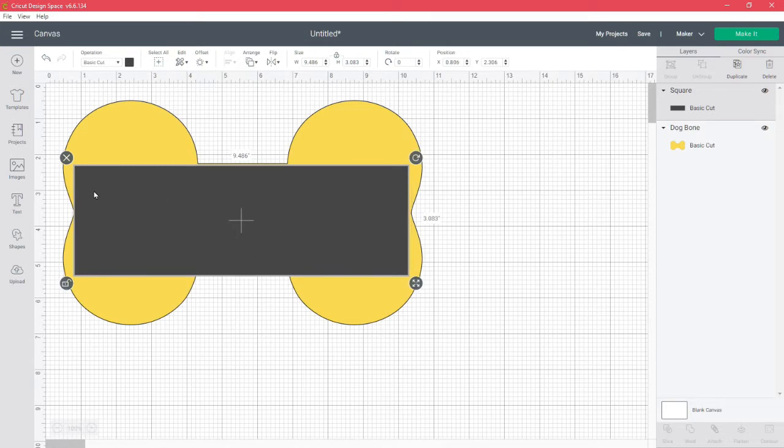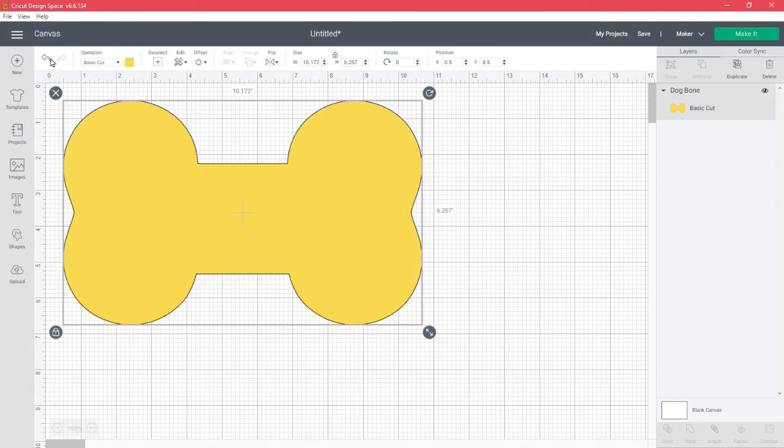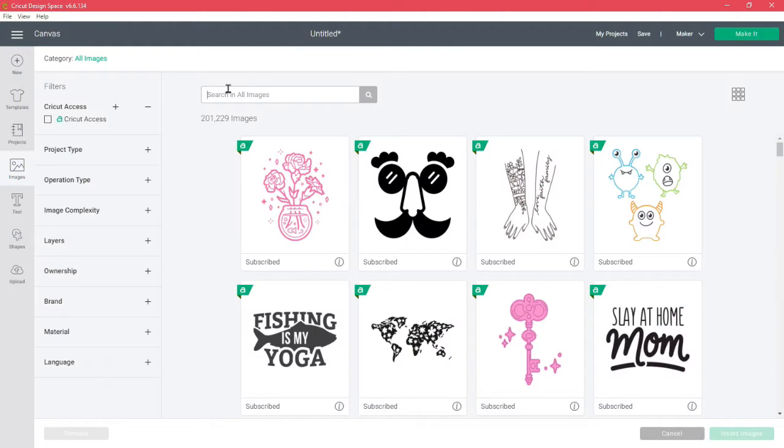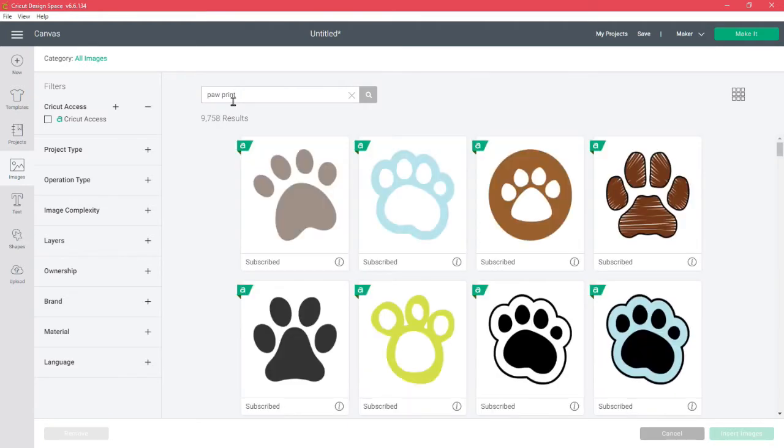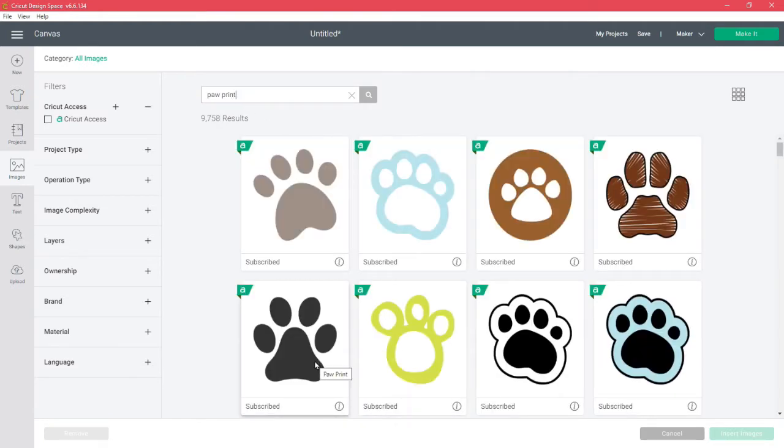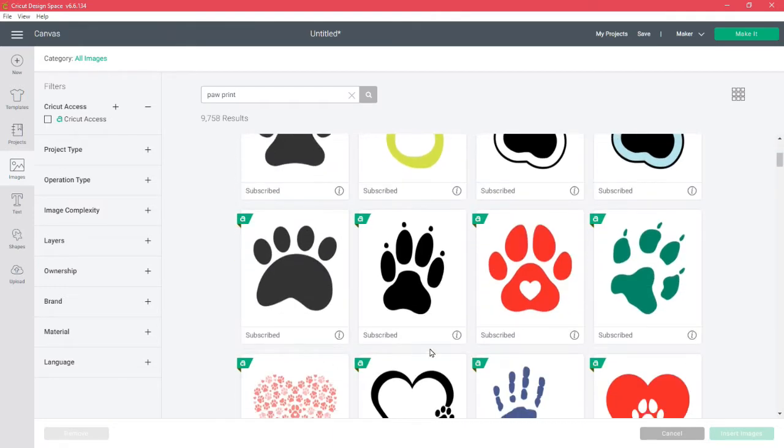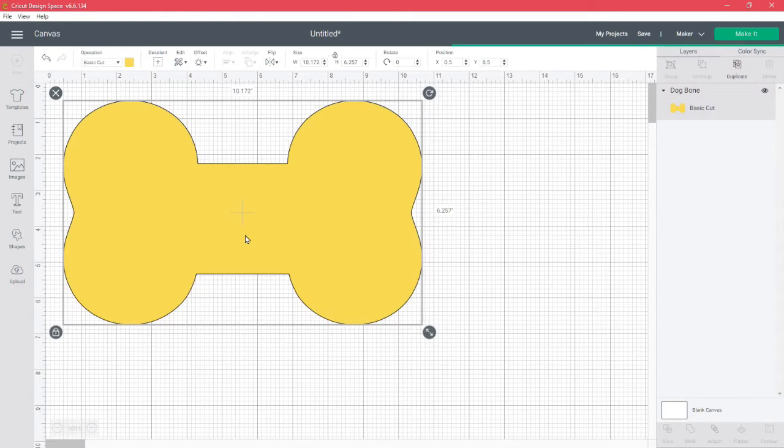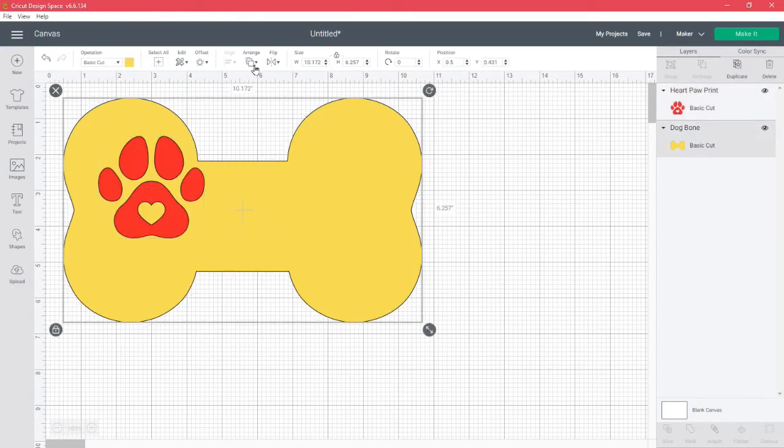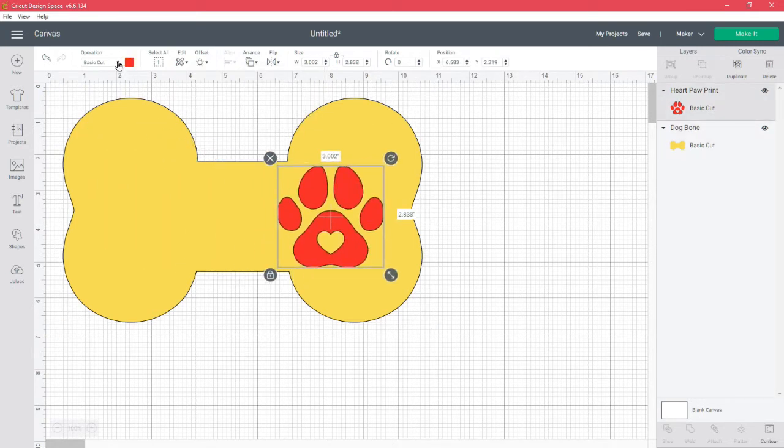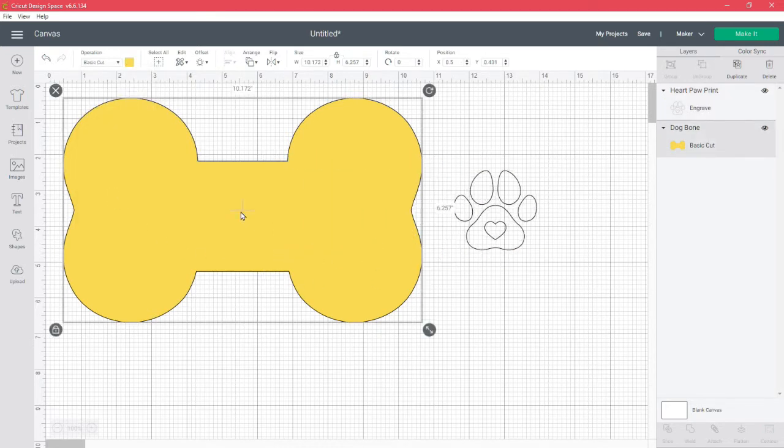And then again from that line to that line, and that's what I would use there as my template. Today I'm going to use this one though, so I'm also going to go back in here and I want a paw print. I want to make sure this is in the back, which it is. That needs to be changed from the basic cut to an engrave.